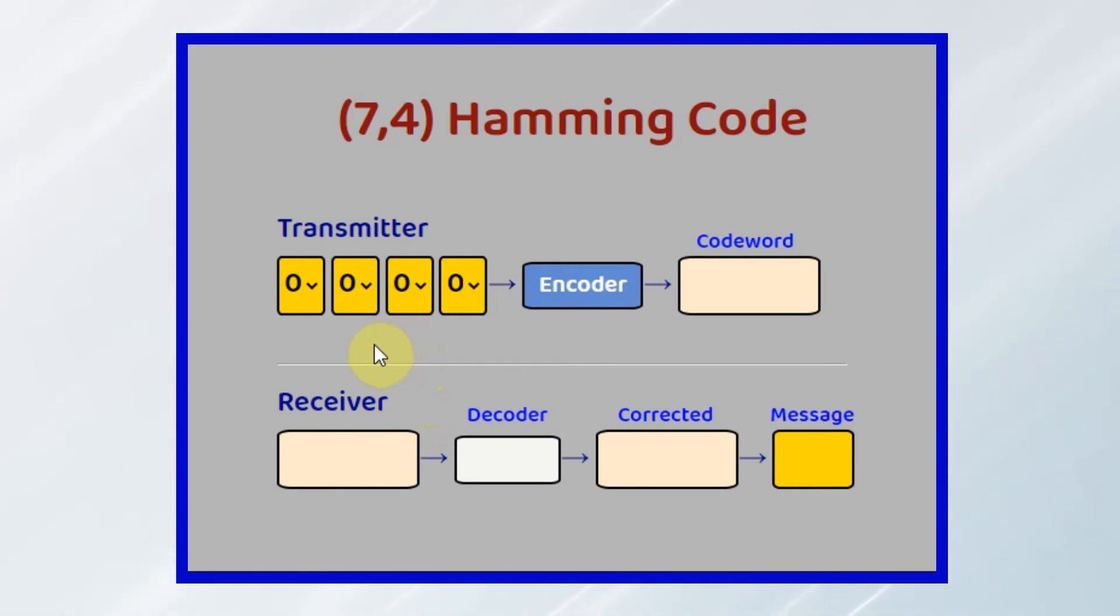And now, let's demonstrate the 7-4 Hamming code. Let's say the message we want to transmit is this value, 1, 0, 0, 1. We feed it into the encoder, and this is the generated codeword, which is then passed to the noisy channel. And at the receiver, you can see that the decoder has detected a single error. And it has located the error and corrected it, and now we have the corrected codeword. And then the message is extracted, which is the same transmitted message.